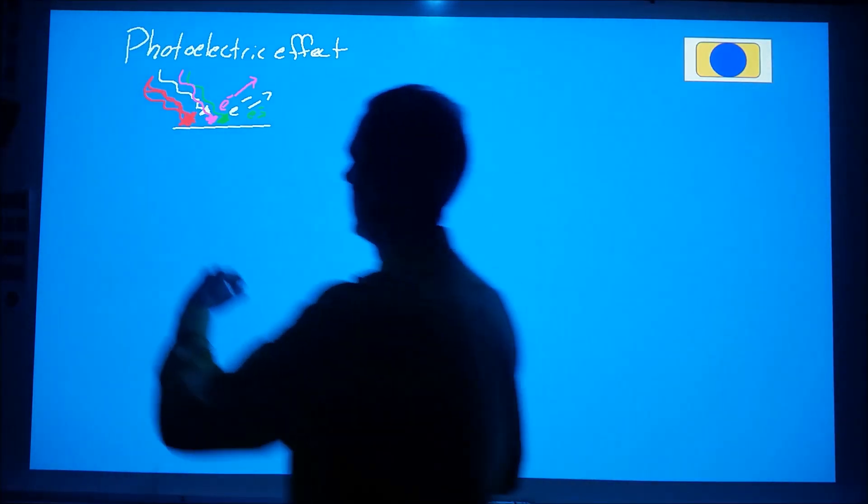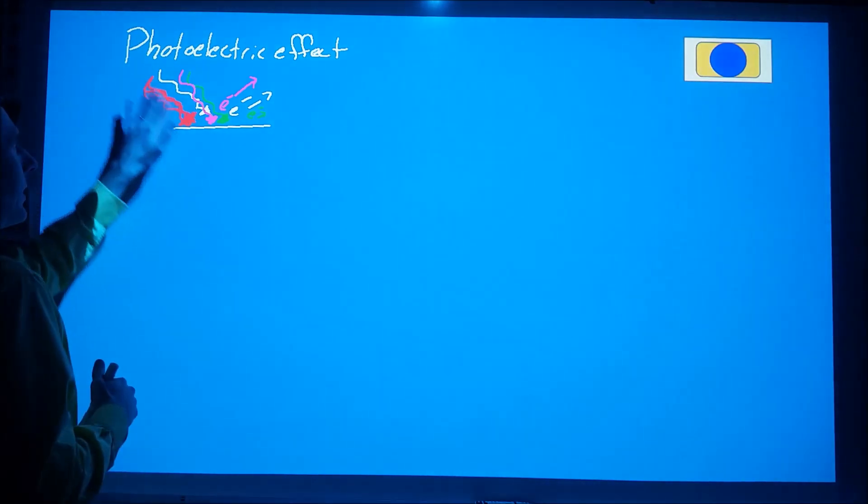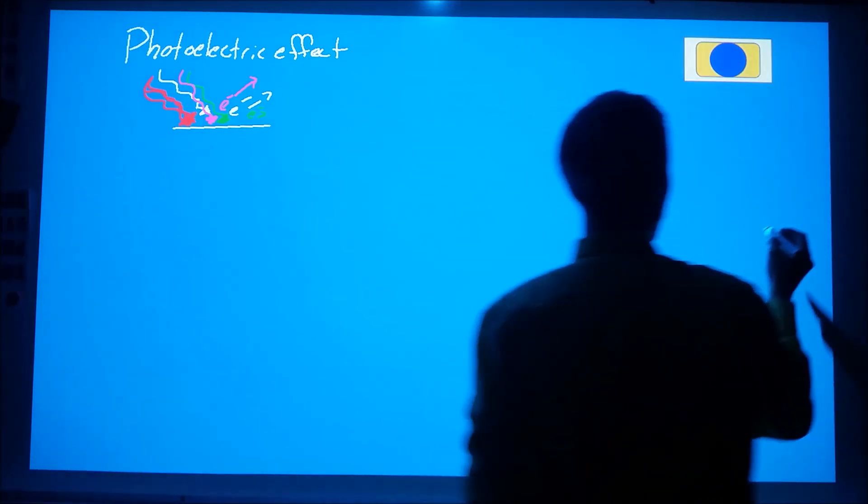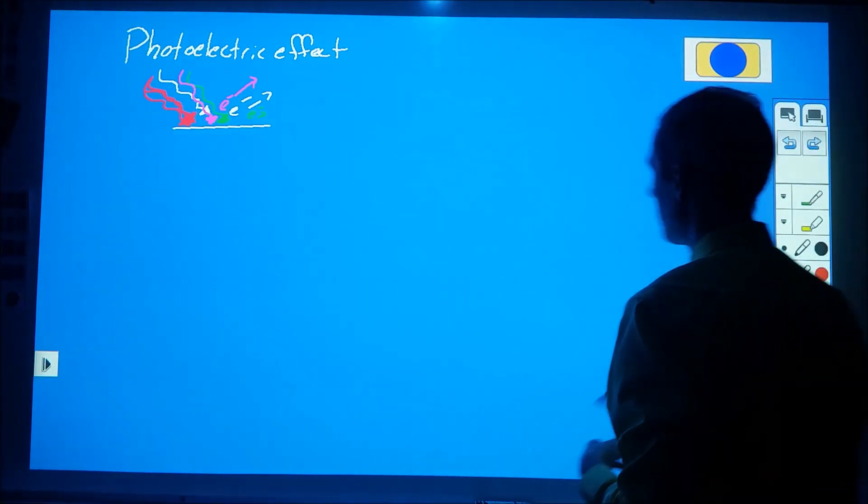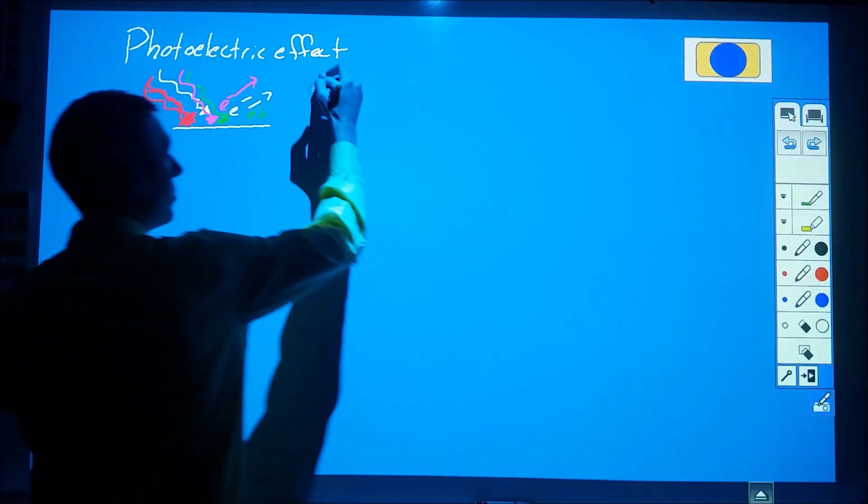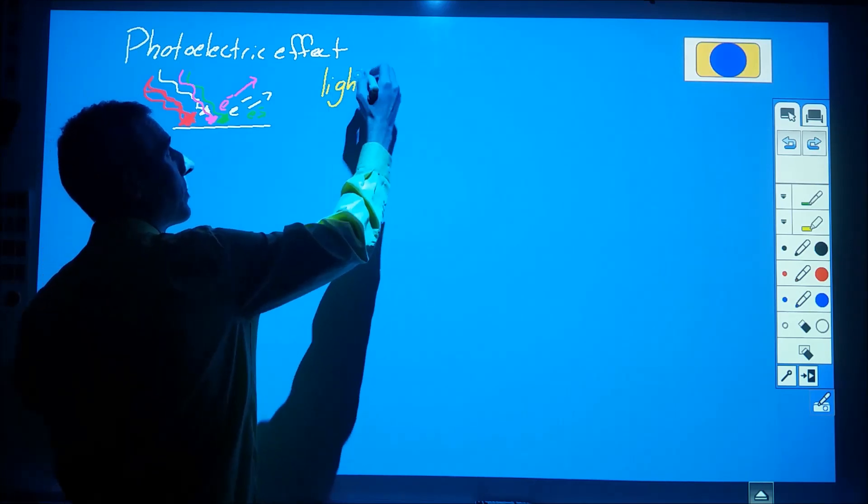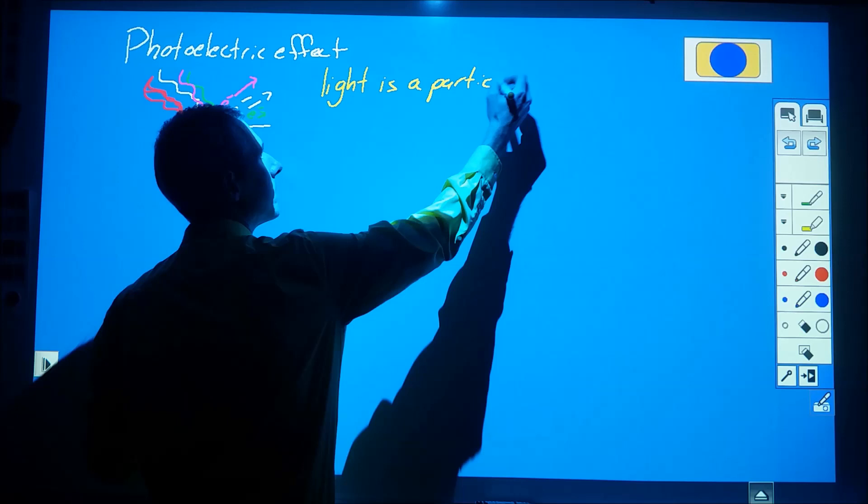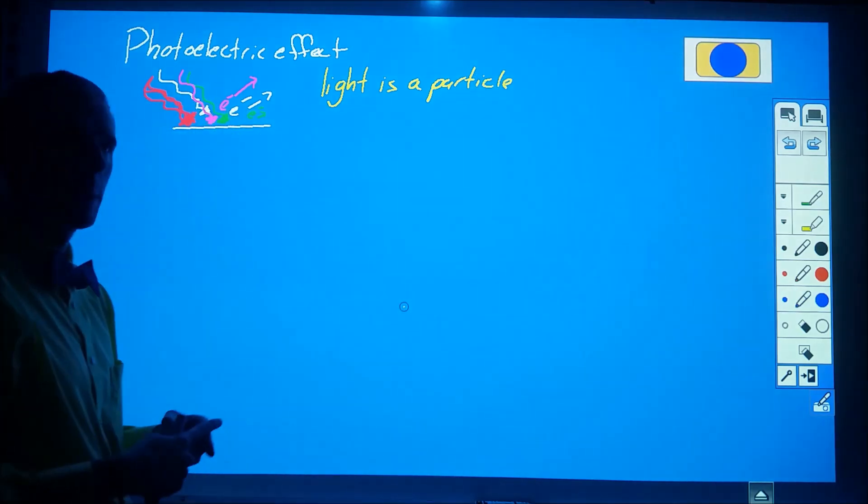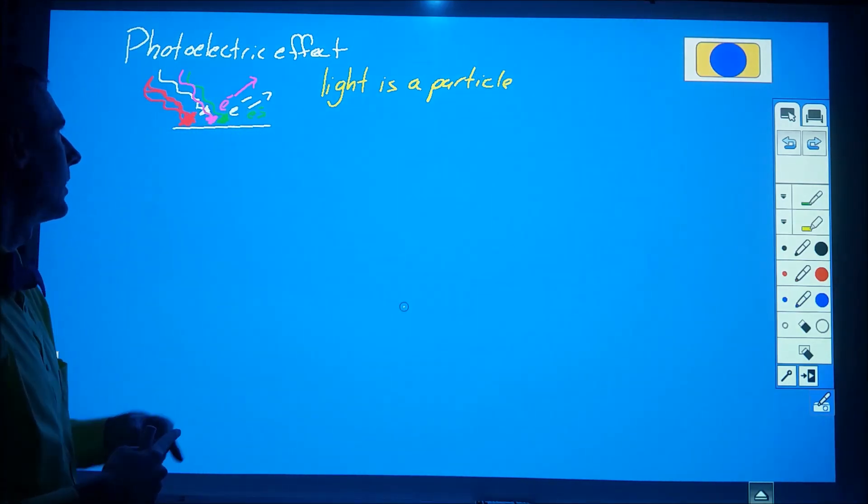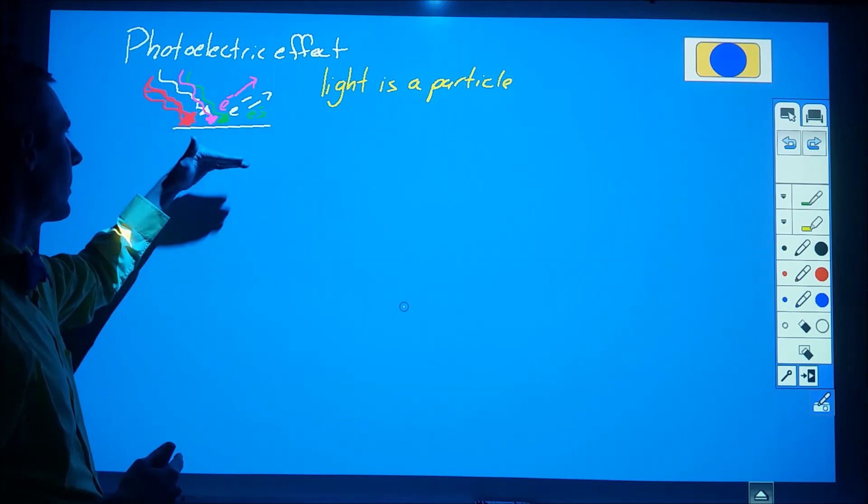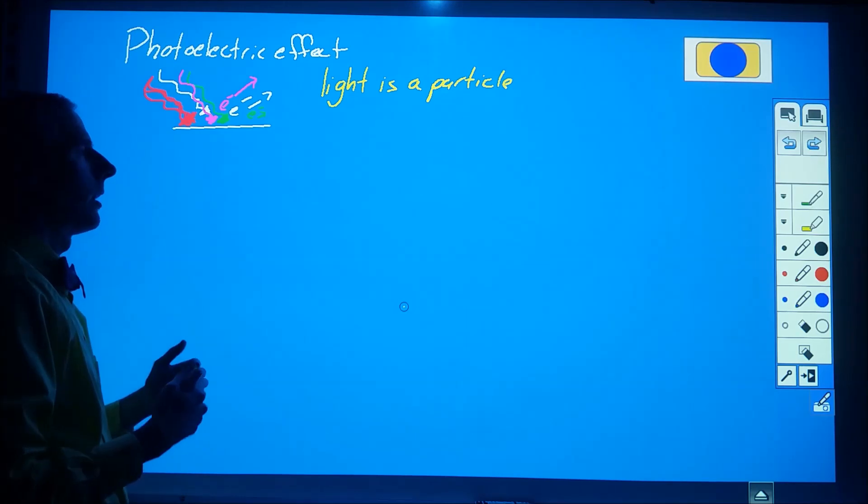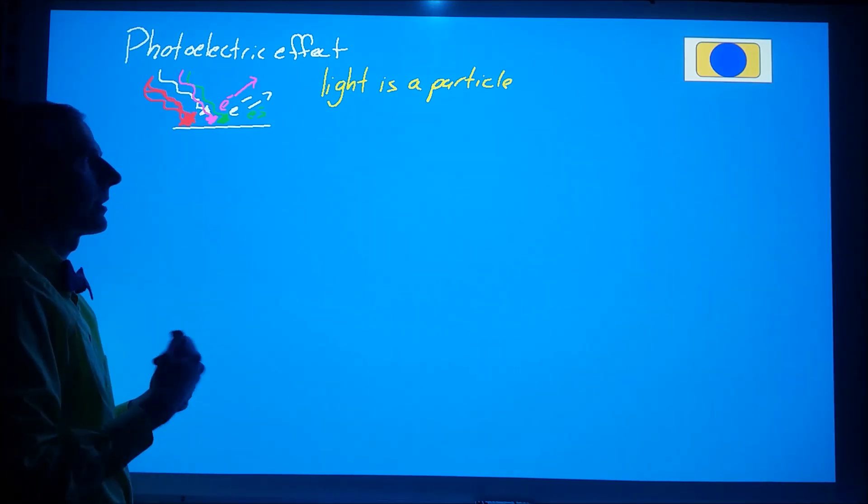Even if I had trillions of red light waves hitting this, nothing would happen. This is a fundamental experiment, and the conclusions drawn from that, I'm not necessarily comfortable with. The conclusion drawn from that is that light is a particle. Generally speaking, I don't agree with the fact that light is a particle.